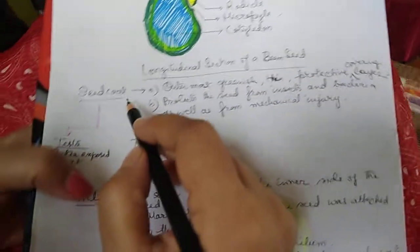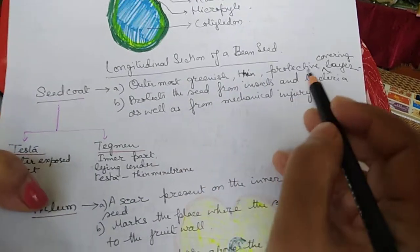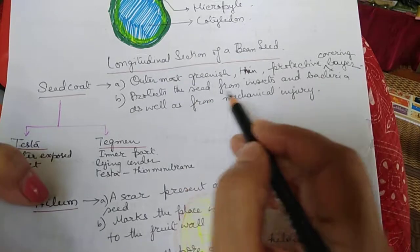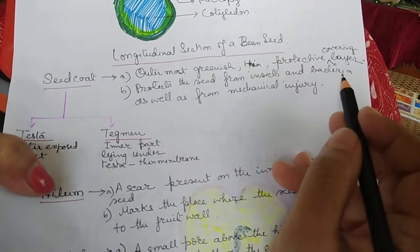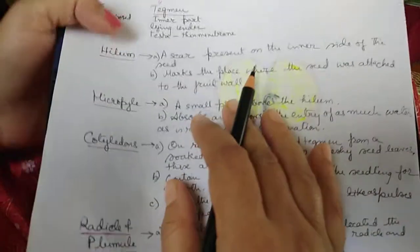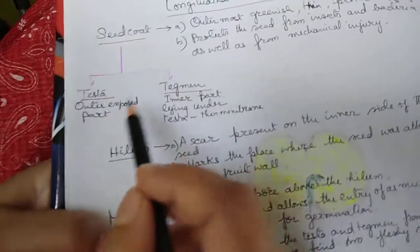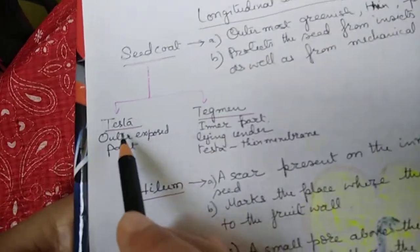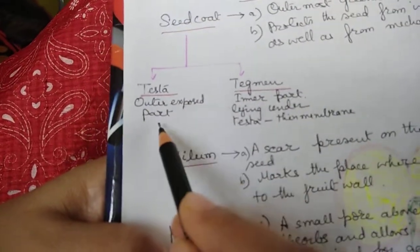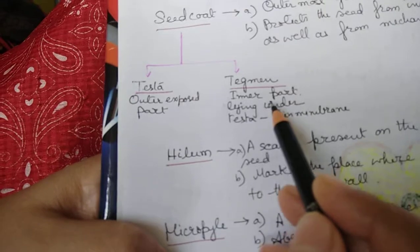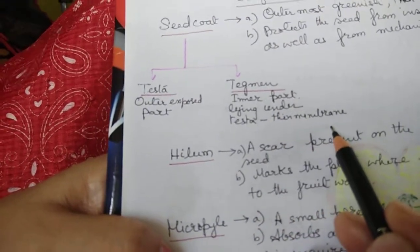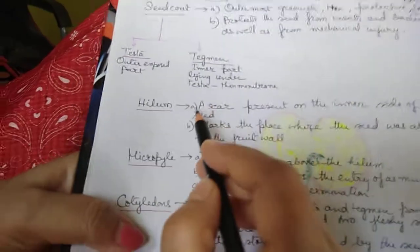The seed coat is the outermost greenish thin protective covering layer. It protects the seed from insects, bacteria, and mechanical injury. The seed coat is divided into two parts: testa, which is the outer exposed part, and tegmen, which is the inner part lying under the testa — a thin membrane.